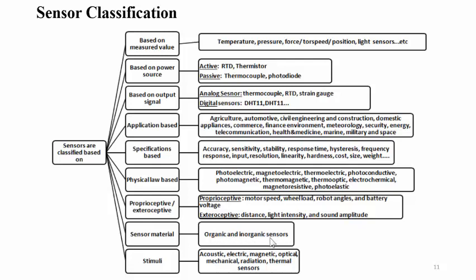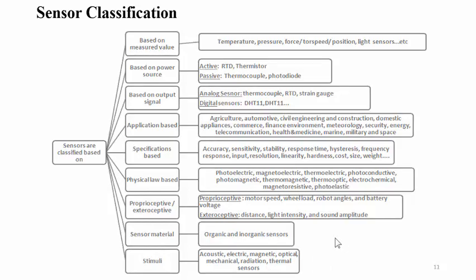Classification based on sensor material distinguishes organic and inorganic sensors. Inorganic sensors use conductors, semiconductors, or biological substances, while organic sensors use insulator, liquid, gas, or plasma-based materials. Based on type of physical parameter or stimuli, classifications include acoustic wave measurement, electric parameter measurement, magnetic field detection, optical detection, mechanical displacement, angular and linear velocity, radiation-based stimuli, and thermal sensors.